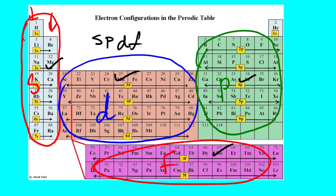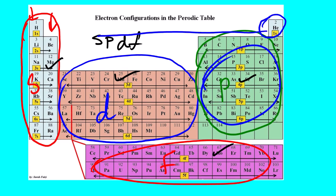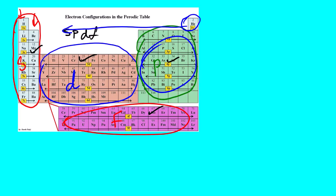Now under the P orbitals section, all the elements are in the P orbital except for helium. Helium actually belongs in the S orbital section, but it cannot be in group number two because it's a noble gas — it's supposed to be in group number eight. So under one S we have a maximum of two elements: hydrogen and helium.